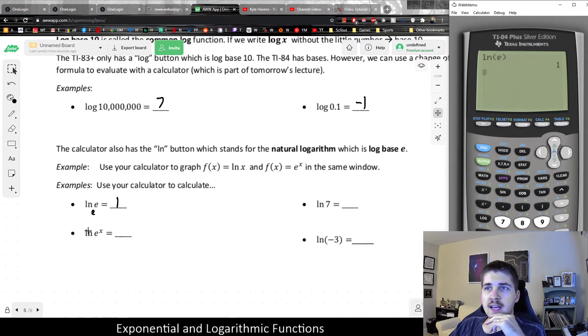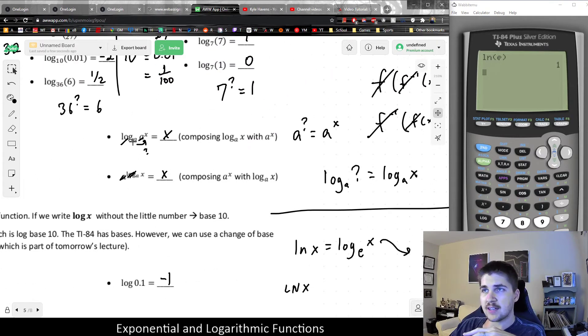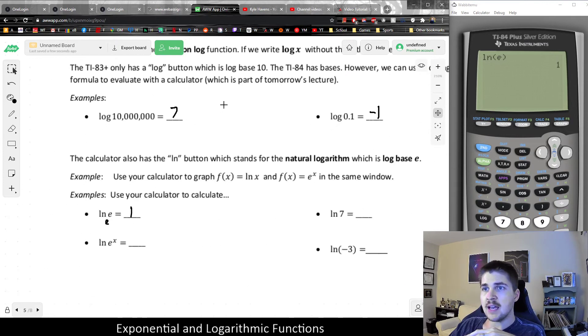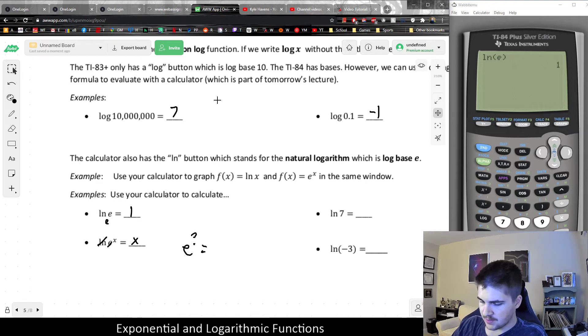And because another important property is when you have the ln of e^x, just like we had for log base a of x when it was a match of the bases, basically ln and e will cancel each other out, and it will leave me with just x. Because what I'd be thinking about is e to what power makes e^x? And of course, the answer to that question would be x.